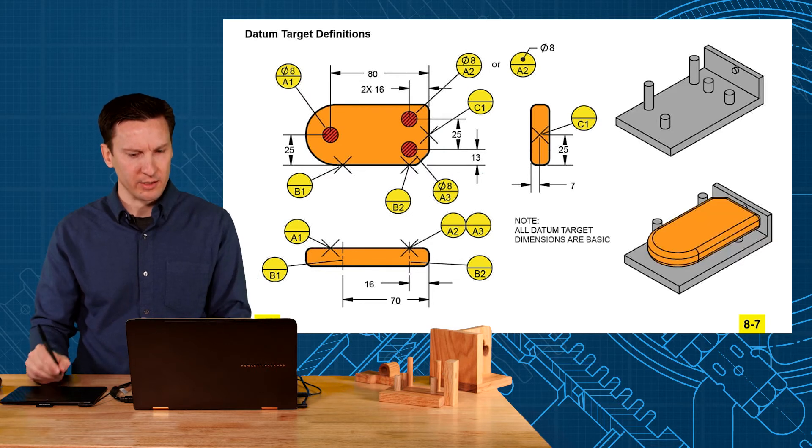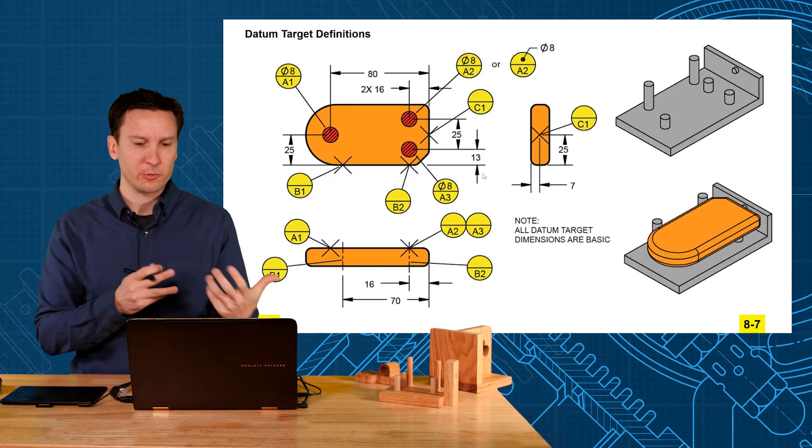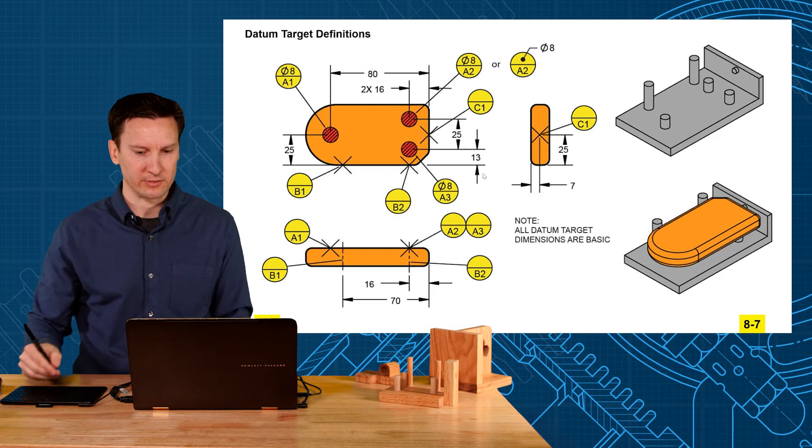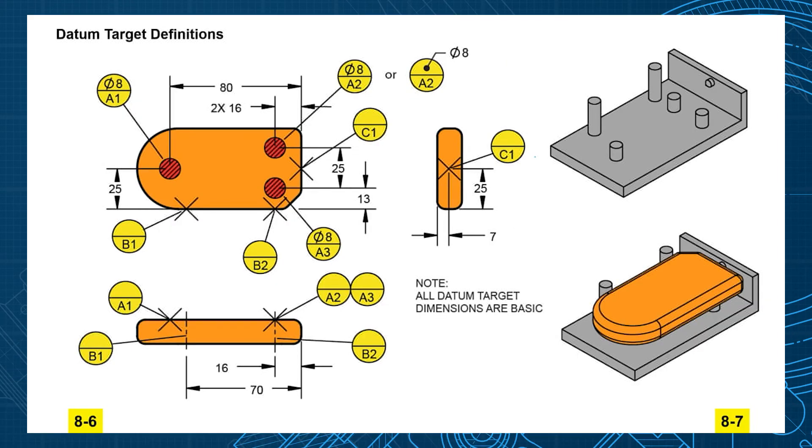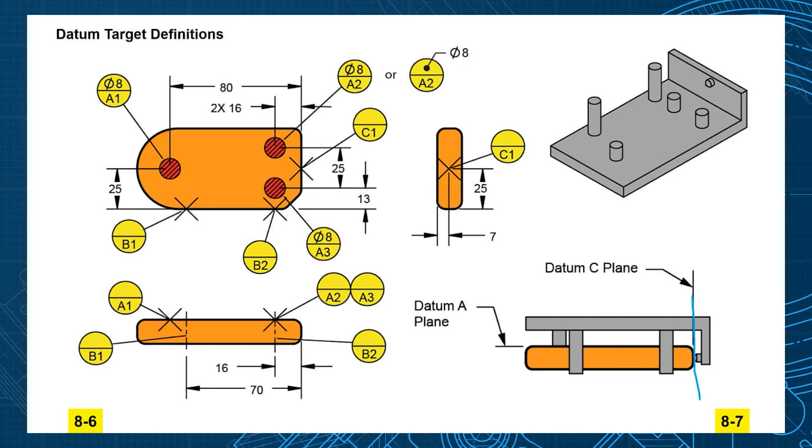And what these represent is a fixture. So when you take this imperfect casting or plastic part, how do you constrain its six degrees of freedom? Well, we set up with targets. Here are three points for A, two lines for B, and one for C. So now the part is going to index itself on that three, two, one fixture. Our datum reference frame gets created from those datum targets.